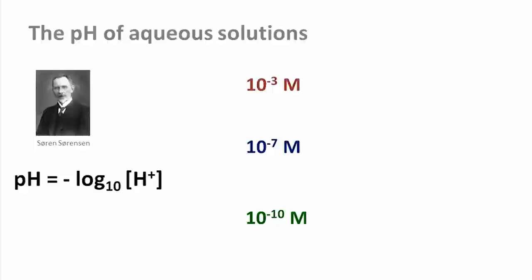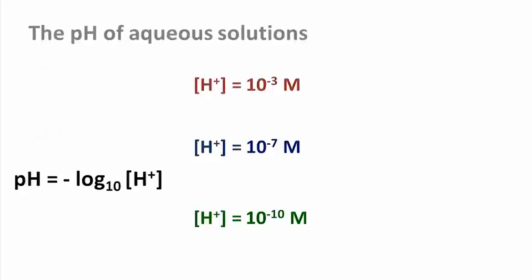This idea was introduced by the Danish chemist Søren Sørensen, who worked for the Carlsberg laboratory. That means that if our proton concentrations are 10 to the minus 3, 10 to the minus 7, and 10 to the minus 10, respectively, the pH of those solutions is 3, 7, and 10.